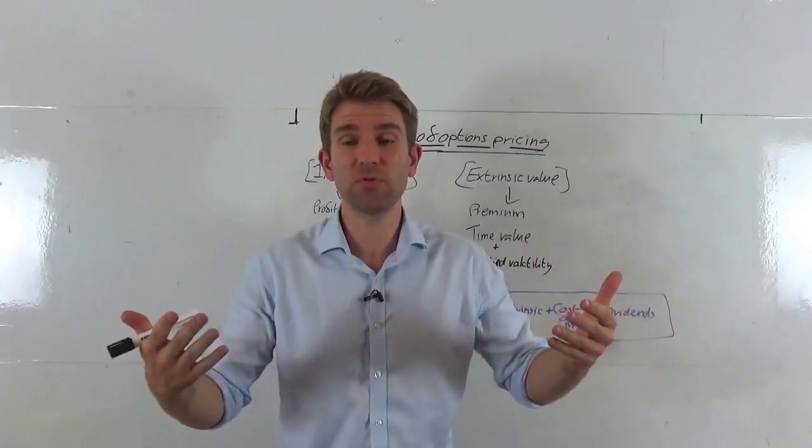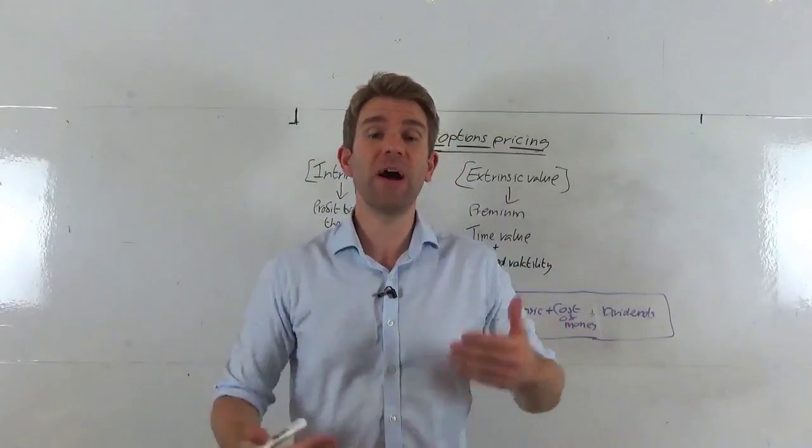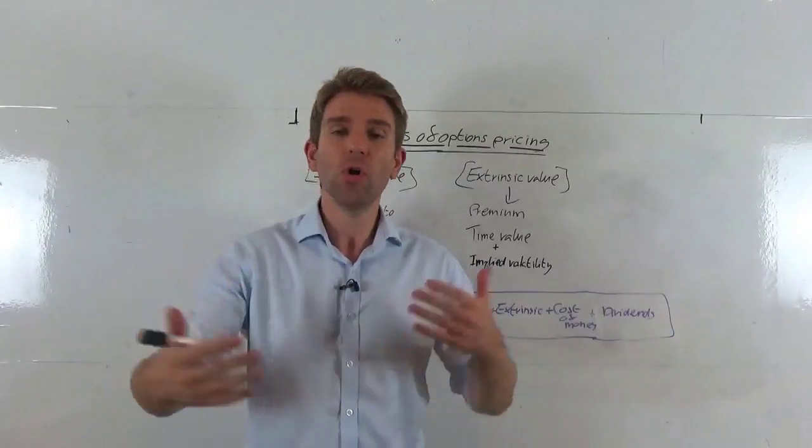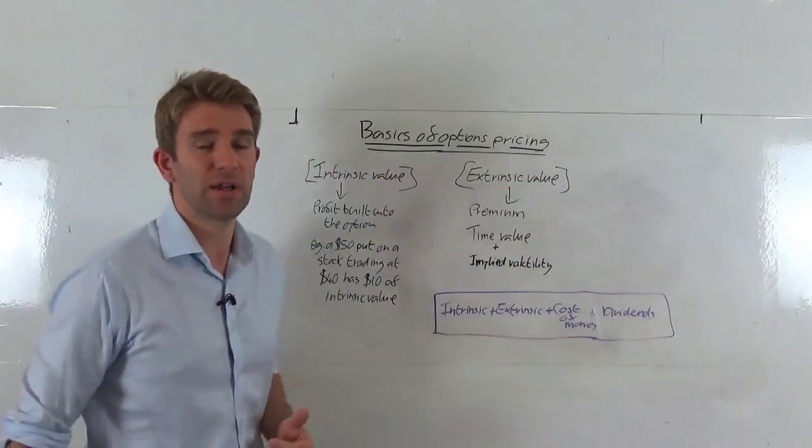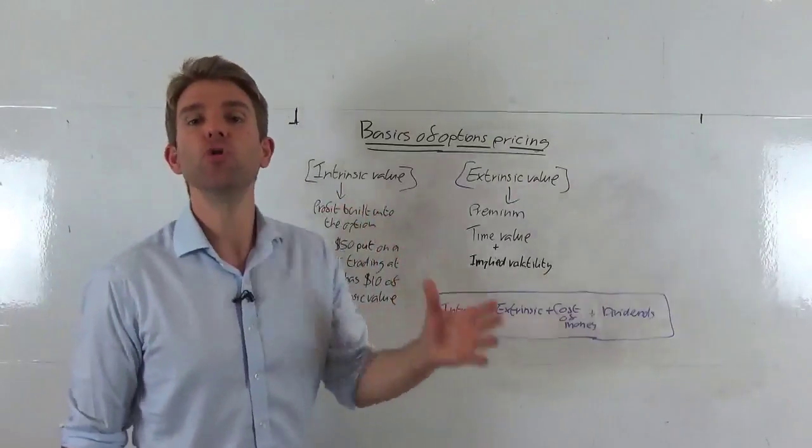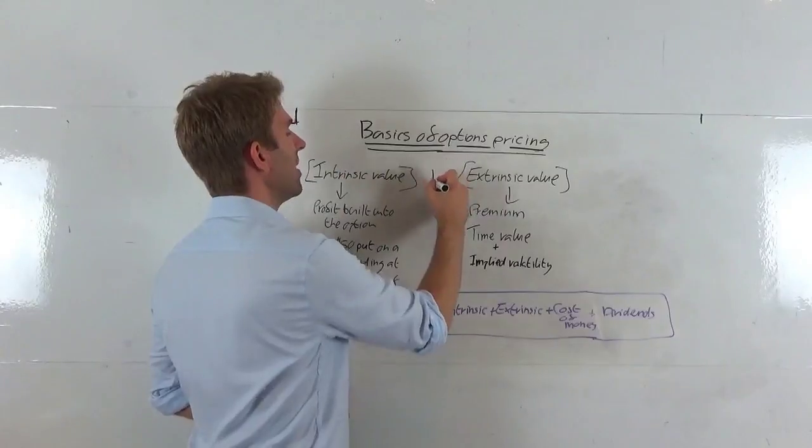We can see the major components that affect the options price that we're trading and decide whether to take a position or not, decide whether it's value, whether we think it's good. Let's break it down into some simple ways to look at it. Really, we have two components to an options price: we have the intrinsic value and the extrinsic value.